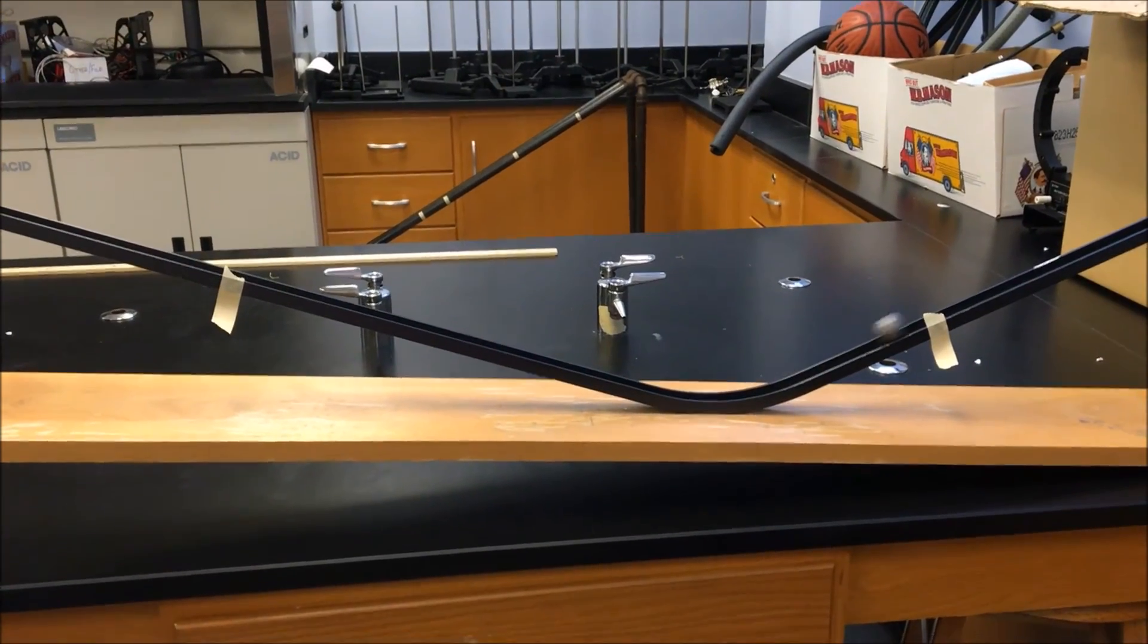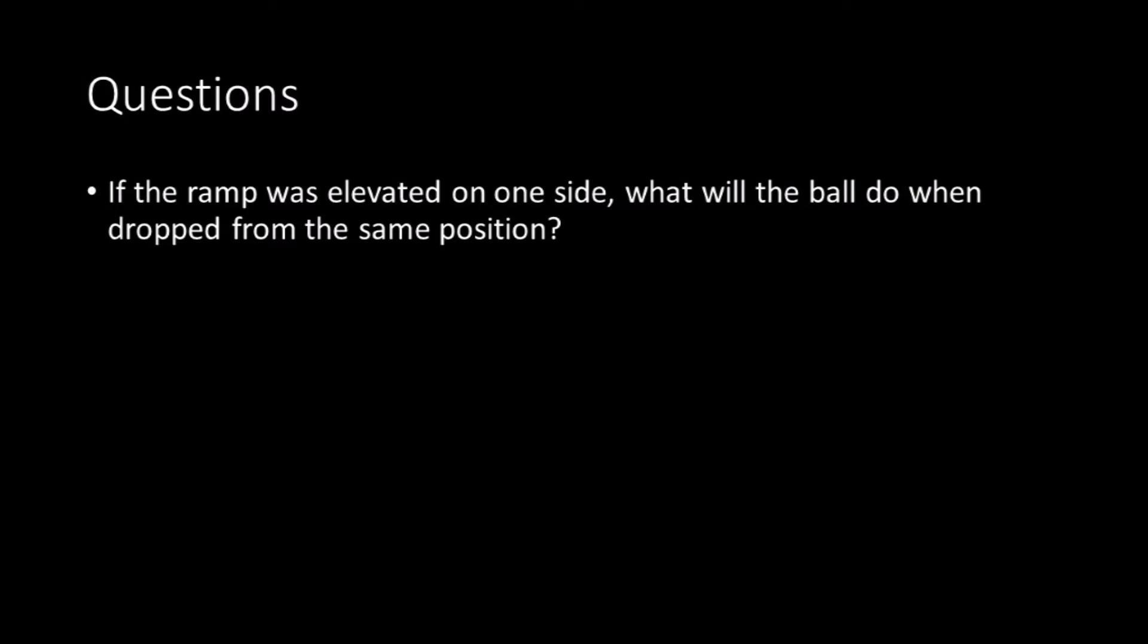Alright, part two. Now one side of the U-shaped ramp is inclinated. If the ramp was elevated on one side, what will the ball do when dropped from the same position? The ball will roll further until it reaches the same height it was released at.